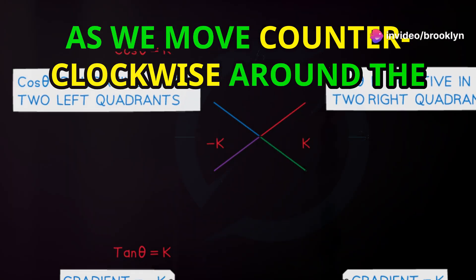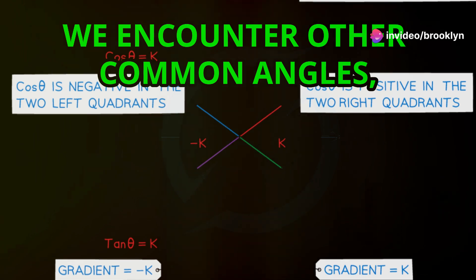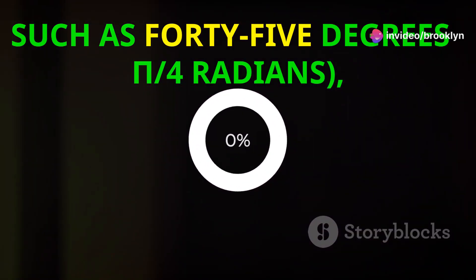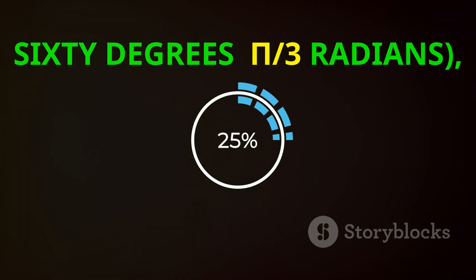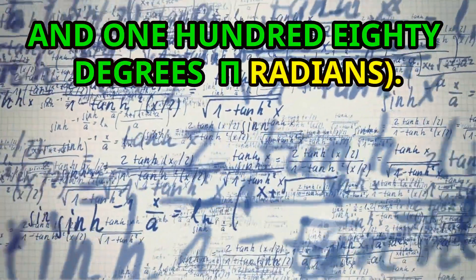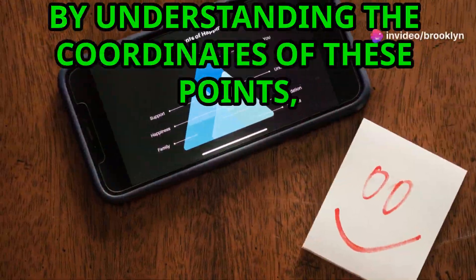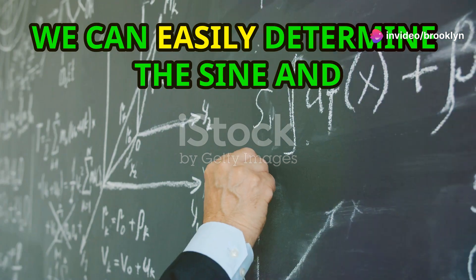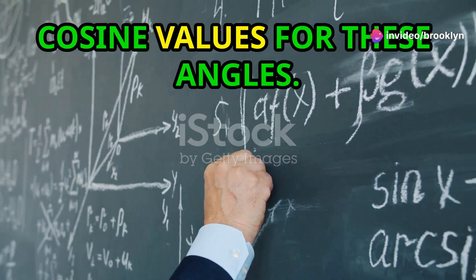As we move counterclockwise around the unit circle, we encounter other common angles such as 45 degrees (π/4 radians), 60 degrees (π/3 radians), and 180 degrees (π radians). By understanding the coordinates of these points, we can easily determine the sine and cosine values for these angles.